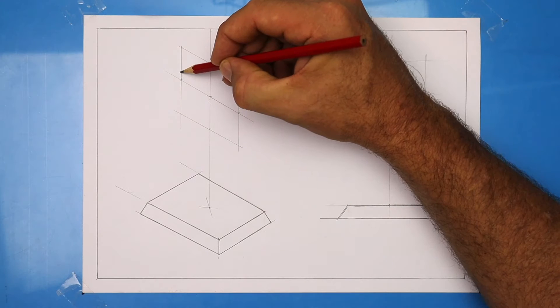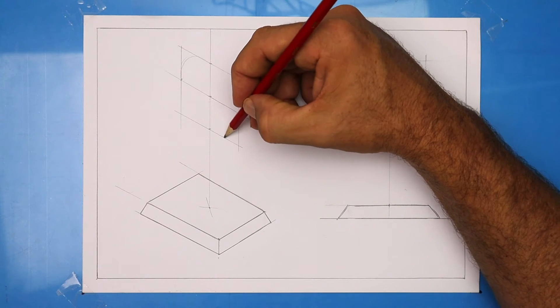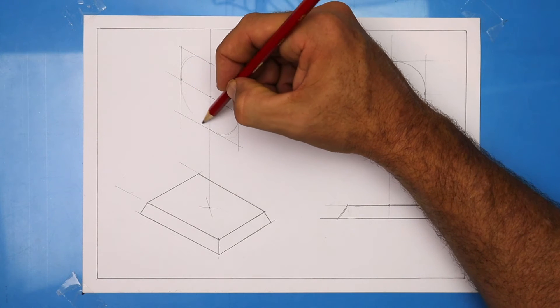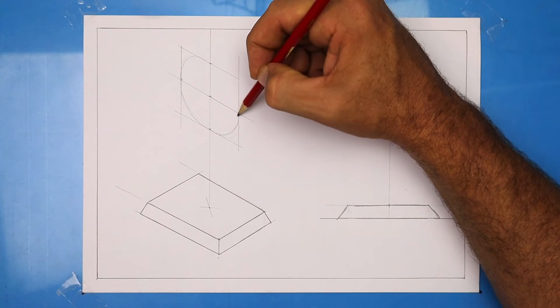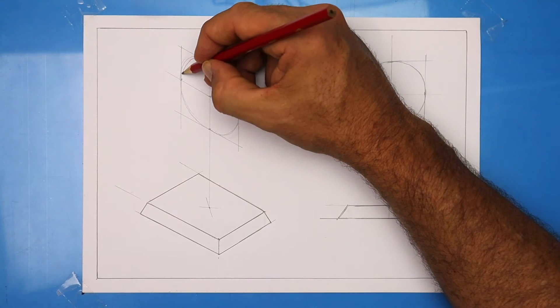With the isometric circle it's easy to draw these little tight ones into the corner first. And then draw the longer curves in the other two quadrants. Try and get it smooth before you come back and darken it in.